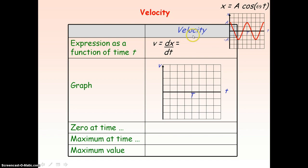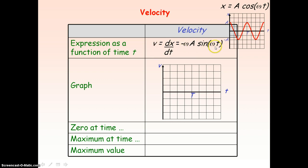We're now going to consider the velocity of an object oscillating under simple harmonic motion and how the velocity changes with time t. Our definition of velocity is the rate of change of displacement, represented as dx/dt. So mathematically, if we differentiate our expression for displacement with respect to time t, we get velocity. Differentiating cos gives a minus sign, and because of the ωt term, omega also comes out, giving us the expression for velocity: v = -aω·sin(ωt).